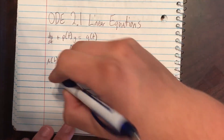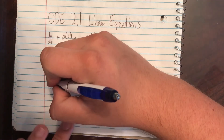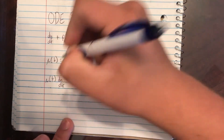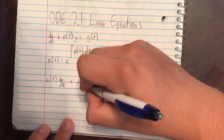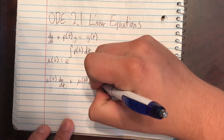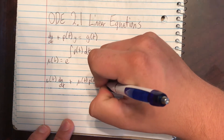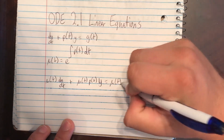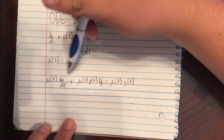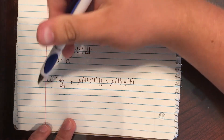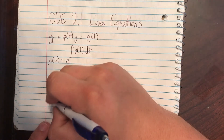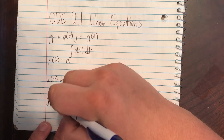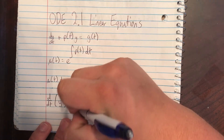And we'll multiply all terms by mu of t, so it's going to be mu of t times dy/dt plus mu of t times p of t times y. This left side is actually going to be product rule, so you'll have the derivative with respect to t of y times mu of t.